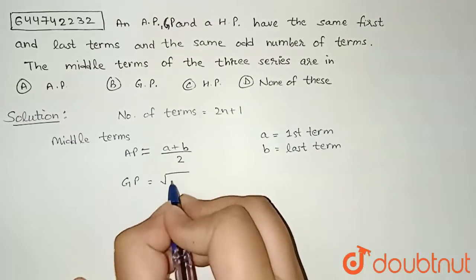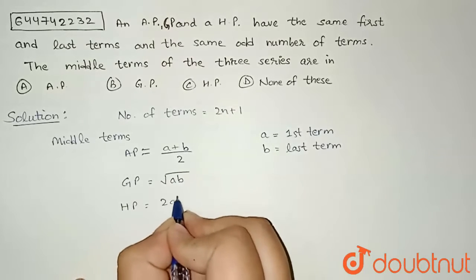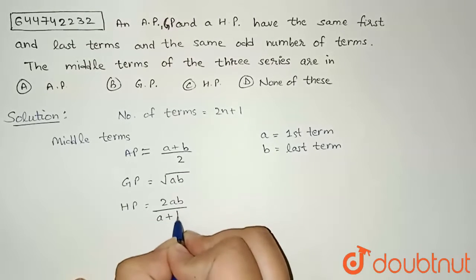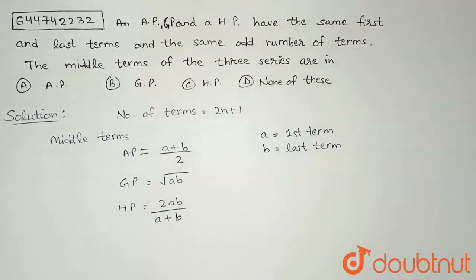it will be √(ab), and if I talk about HP, it will be 2ab/(a+b). Now we are told that the middle terms of the three series will be in, so let